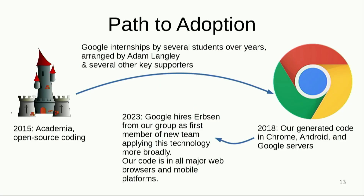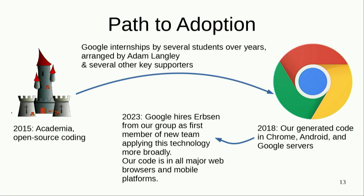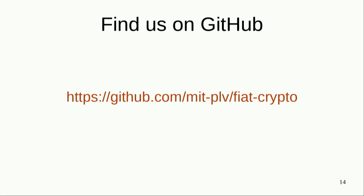The whole story was pretty compelling to people maintaining big open-source cryptographic systems. We initiated this project at MIT in 2015 and released it on GitHub. Several of my students did internships at Google, arranged by Adam Langley, one of the authors of Google's BoringSSL library. In 2018, the first release of Chrome shipped using our code for almost all secure web connections. Since then, Google created a new team specifically to scale up this technology to other production systems, hired one of our students to lead it, and our code has been adopted by all major web browsers and major mobile platforms for their TLS implementations.